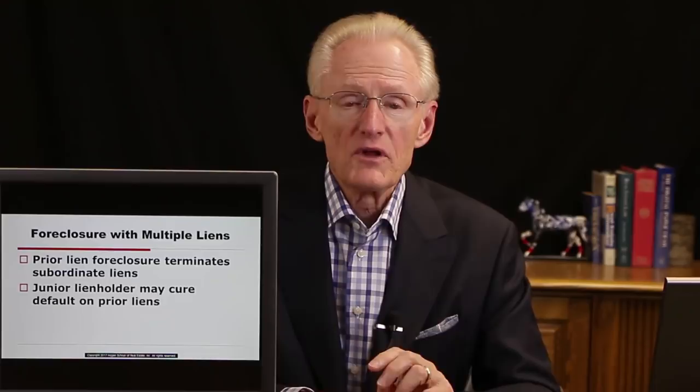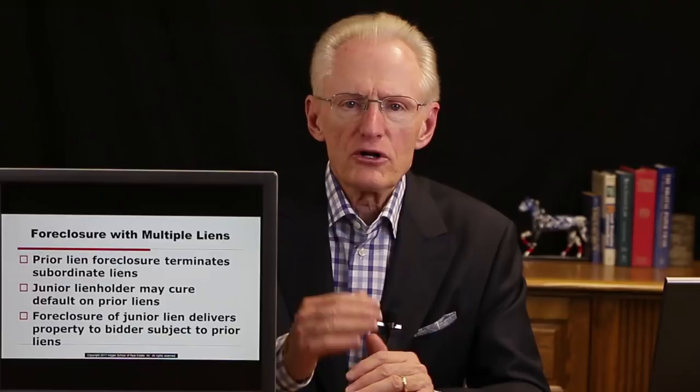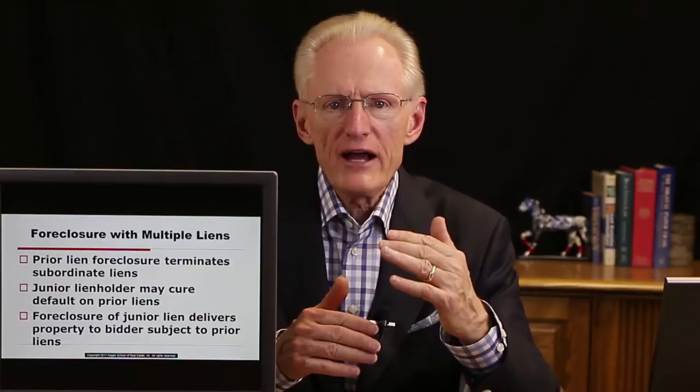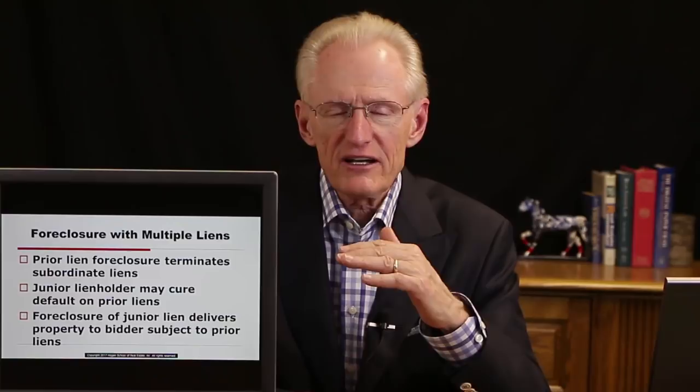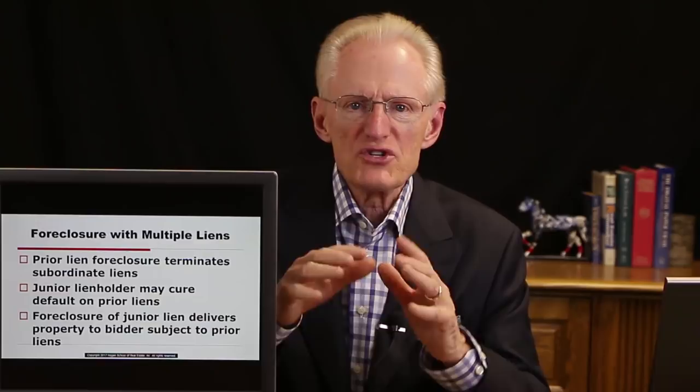The last topic is foreclosure with multiple liens. A prior lien foreclosure — foreclosure of a first lien — will terminate subordinate liens unless there's excess money from the sale. Junior lien holders may always cure default on prior liens to protect their interest — they can bring the payments current or pay off the prior lien. Foreclosure of a junior lien does not deliver the property free and clear to the bidder; it delivers the property subject to the prior liens.